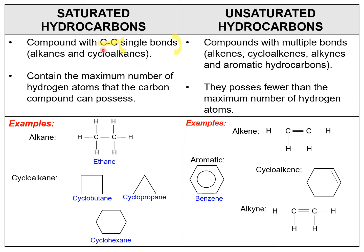Since carbon can make a maximum of 4 covalent bonds, and since this is a carbon-carbon single bond, saturated hydrocarbons can maximize the number of hydrogen atoms for each carbon compound. As you can see here, these are all examples of saturated hydrocarbons — alkanes and cyclic structures for alkanes. For example, cyclobutane has 4 carbon atoms at each corner, cyclopropane has 3, and cyclohexane has 6 carbon atoms, each with 2 hydrogen atoms.